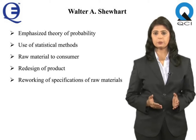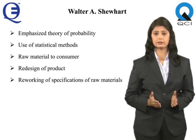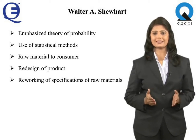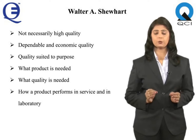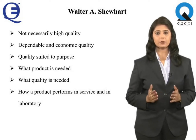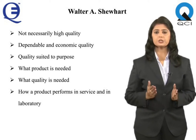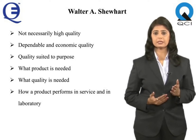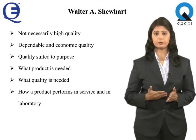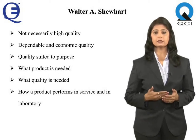Statistical quality control extended all the way from raw material to consumer and back again through redesign of product and reworking of specifications of raw materials in a continuous cycle. He was quick to see that quality must mean not necessarily high quality, but dependable and economic quality suited to the purpose. Statistical methods for discovery of what product and quality is needed, and for learning how a product performs in service and in the laboratory, are thus necessary ingredients of statistical control of quality.